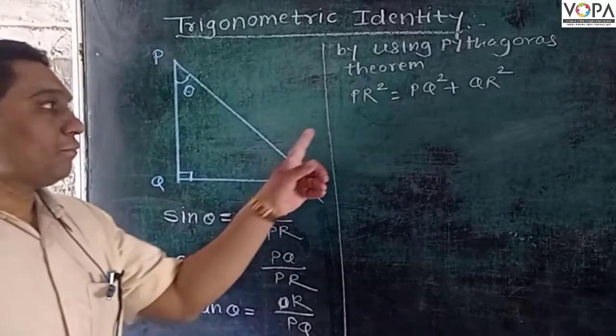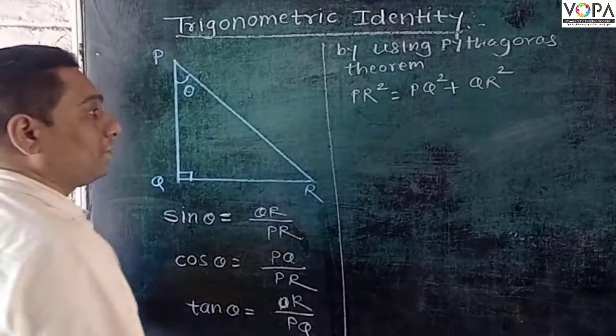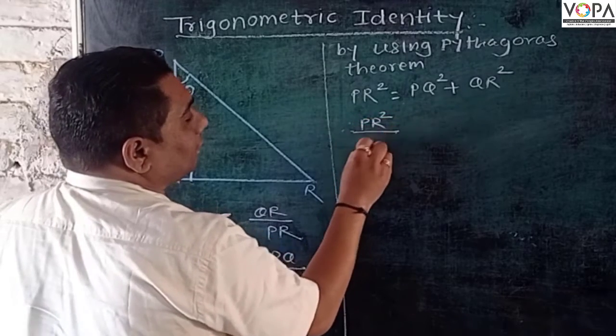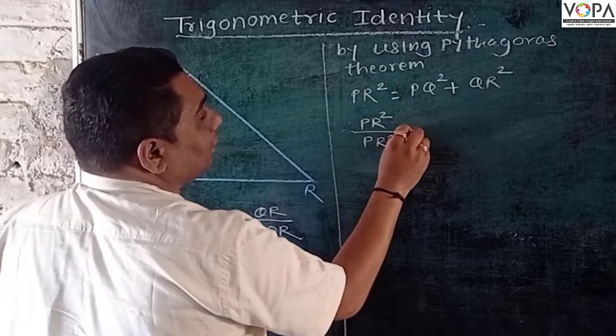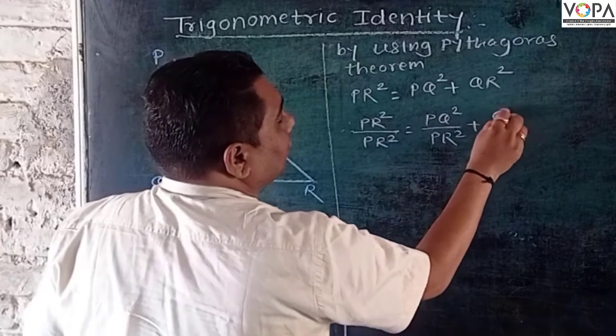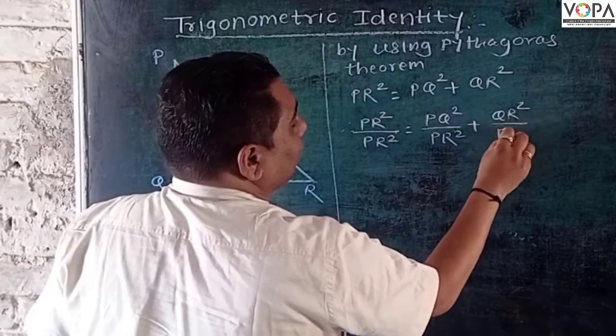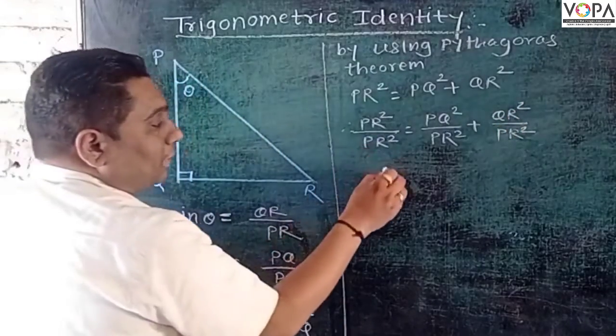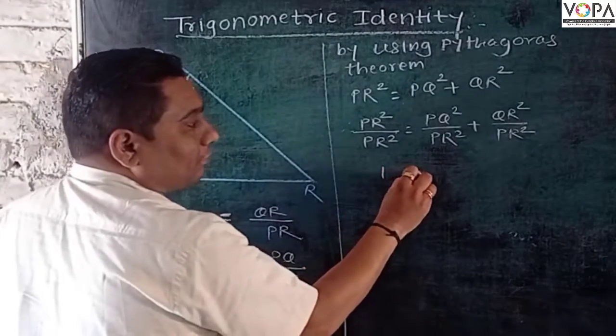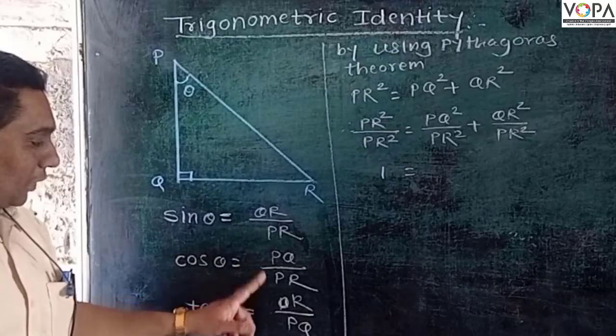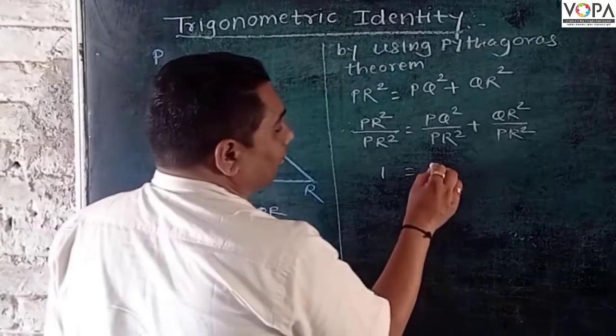Now I divide both sides by PR square. So therefore, PR square upon PR square equals PQ square upon PR square plus QR square upon PR square.